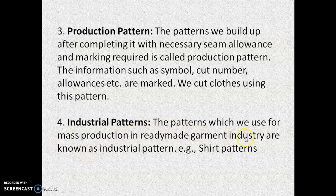Next is the industrial pattern. The patterns which we use for mass production and ready-made garment industry are known as industrial patterns. Industrial pattern jo hota hai, wo mass production ke liye use kiya jata hai and it is made on hard board so that it can be used many times for the same design in the garment industry. For example, basic shirt patterns and lingerie patterns — inke industrial patterns already bana ke rakhe jate hain, so that they can be used as and when required by the industry.